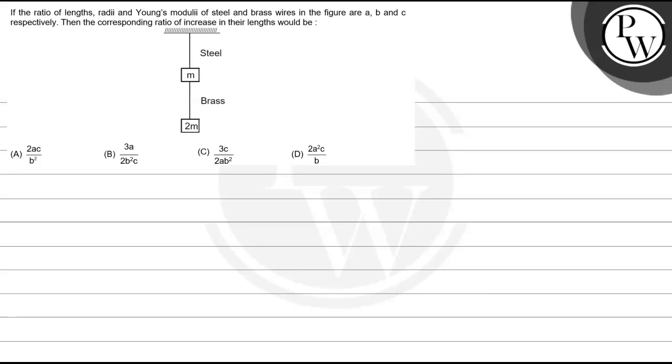Hello Bacho, let us read the question. If the ratio of lengths, radii, and Young's modulus of steel and brass wires in the figure are a, b, and c respectively,